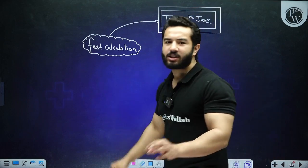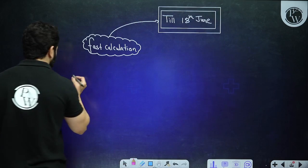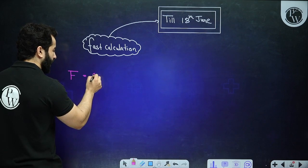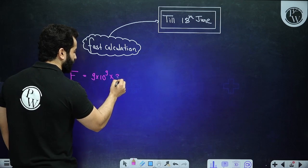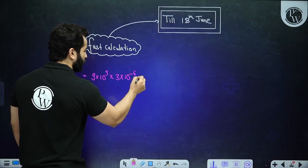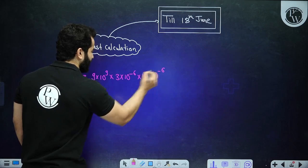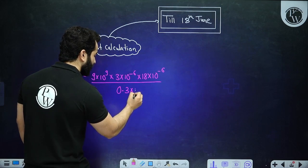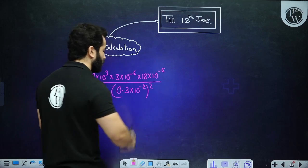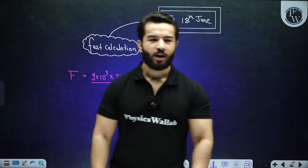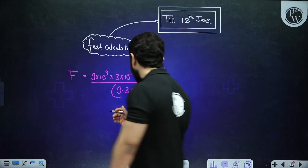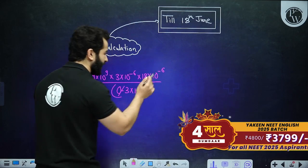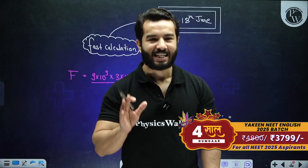So for fast calculation — what do we mean by calculation? Usually what you have seen is, let's suppose we have Coulomb's law formula: 9 × 10⁹, and you have 3 micro coulombs and 18 micro coulombs, kept at a distance of 0.3 millimetres, and you square that distance. This type of calculation we have to do really quickly — we can't do it slowly like this in the NEET exam.